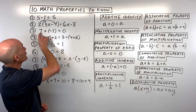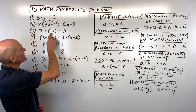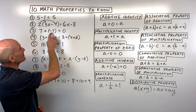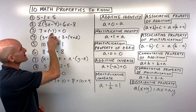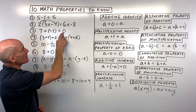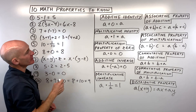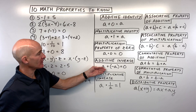For number three, we have seven plus negative seven equals zero. This is seven plus the opposite sign of seven equaling zero — that's called the additive inverse.